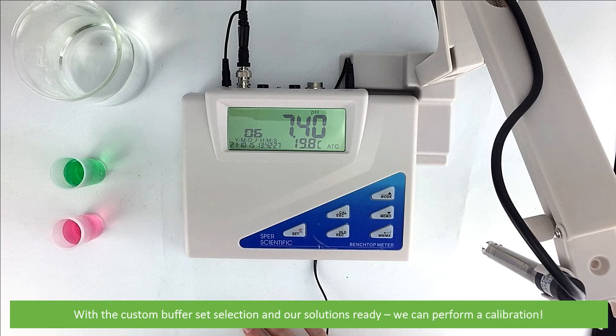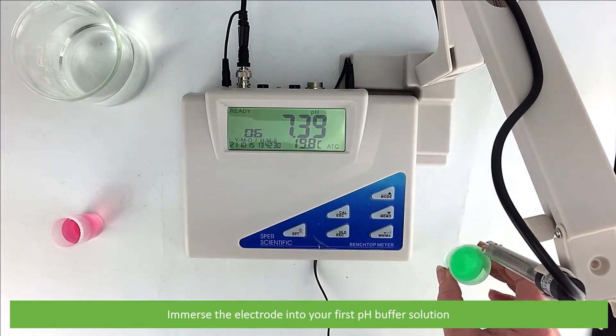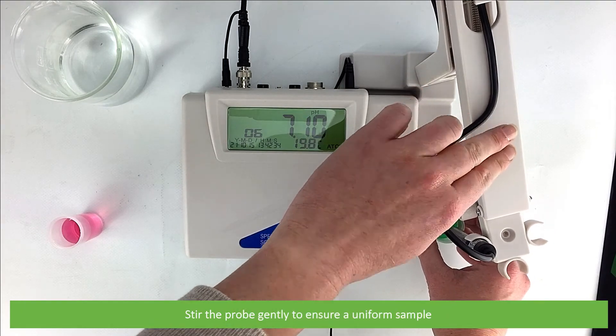With the custom buffer set selection and our solutions ready, we can now perform a calibration. Immerse the electrode into your first pH buffer solution, stirring the probe gently to ensure a uniform sample.